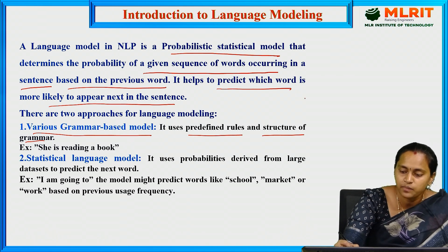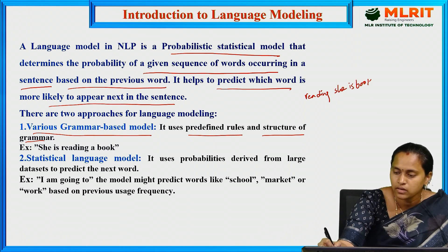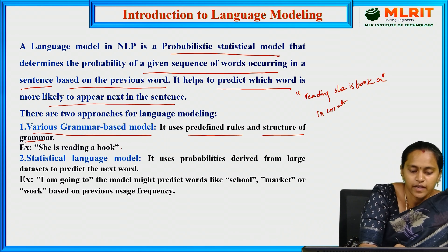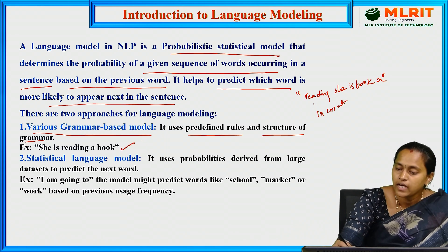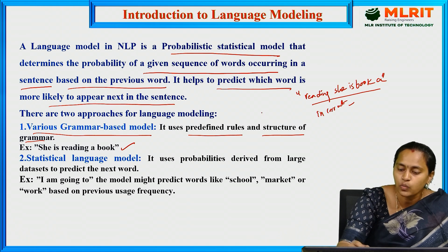Take another example: 'Reading she is book a' — this is not a correct sentence. The correct sentence is 'She is reading a book.' The incorrect version does not follow the rules and structure of grammar.